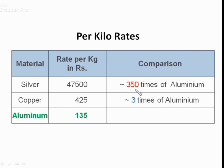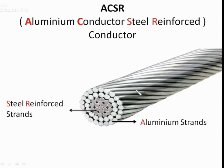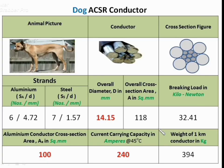It is important to note that copper is three times the cost of aluminium and silver is 350 times that of aluminium. This is how an ACSR conductor looks — the internal strands in dark color are steel and the outer strands in light color are made up of aluminium. This is the table of Dog ACSR conductor.